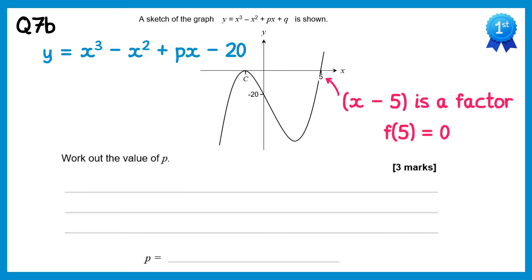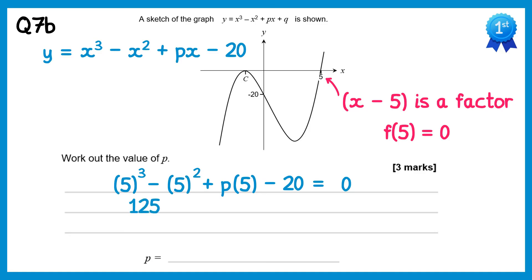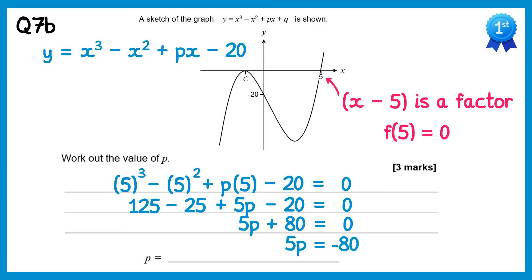So we know that f of 5 must equal 0. Substituting 5 in: 5 cubed minus 5 squared plus p lots of 5 take 20 equals 0. We can simplify: 5 cubed is 125, 5 squared is 25, so take 25, then plus 5p minus 20 equals 0. Collecting up the constant terms we get 5p plus 80 equals 0. Take 80 from both sides: 5p equals negative 80. Divide by 5 and you'll find that p is negative 16.